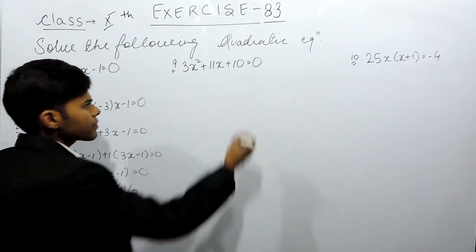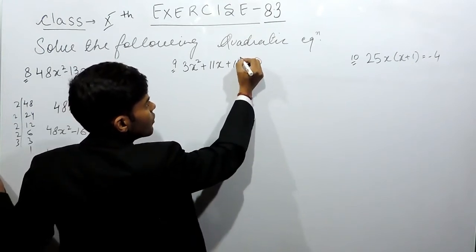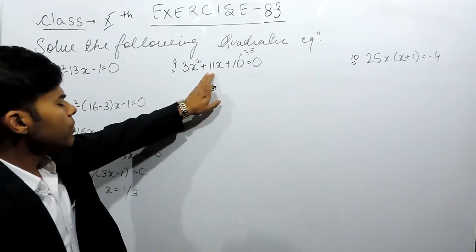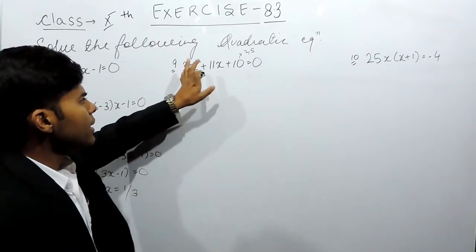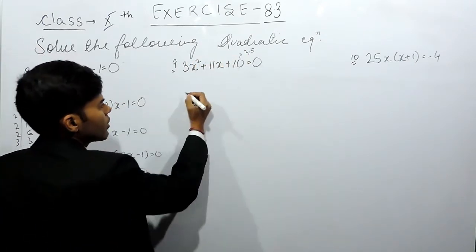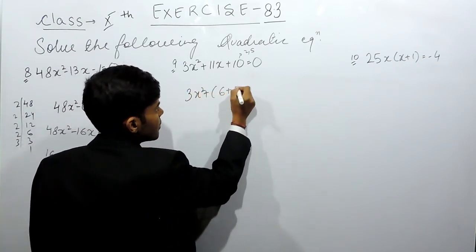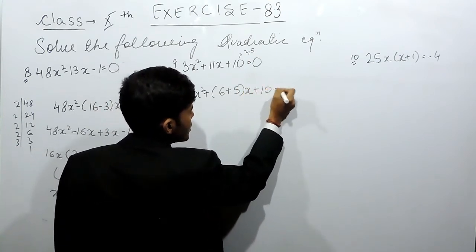Now in the ninth question, the prime factorization of 10 will be 2 and 5, and it is 3, and we have to make it 11. So this can be 6 + 5. So we can write this like 3x² + 6x + 5x + 10 = 0.